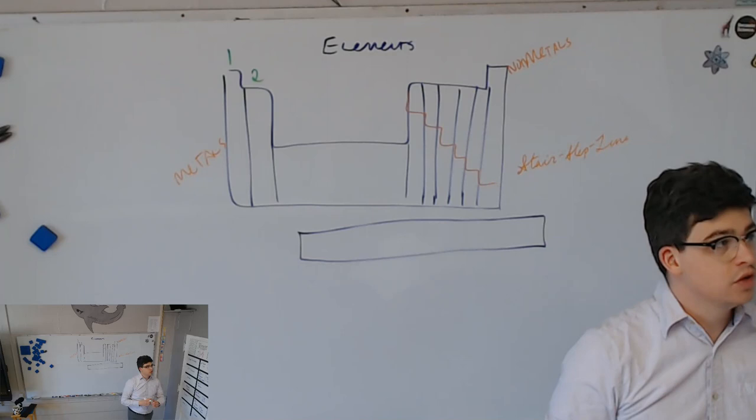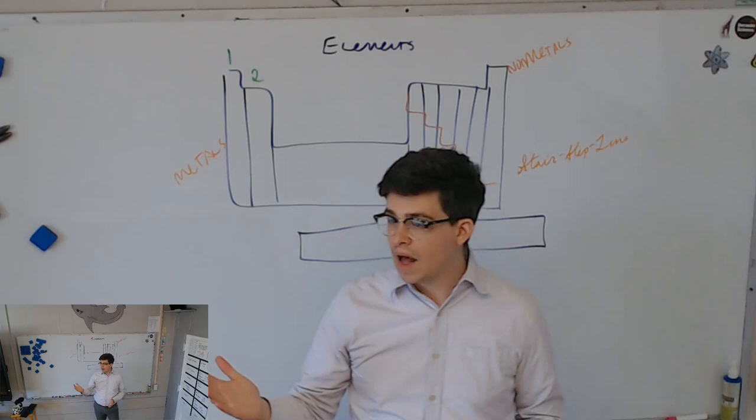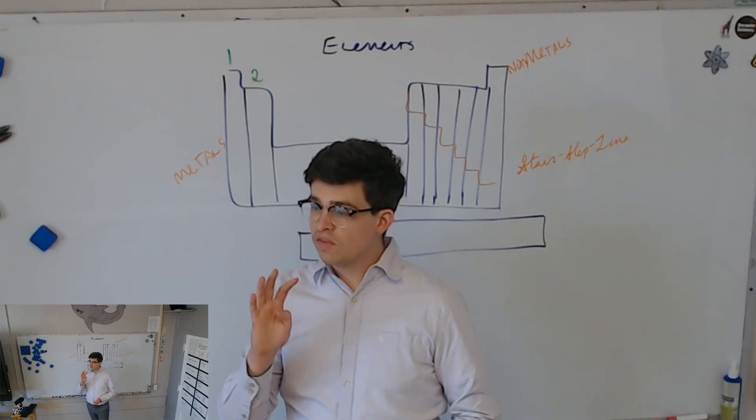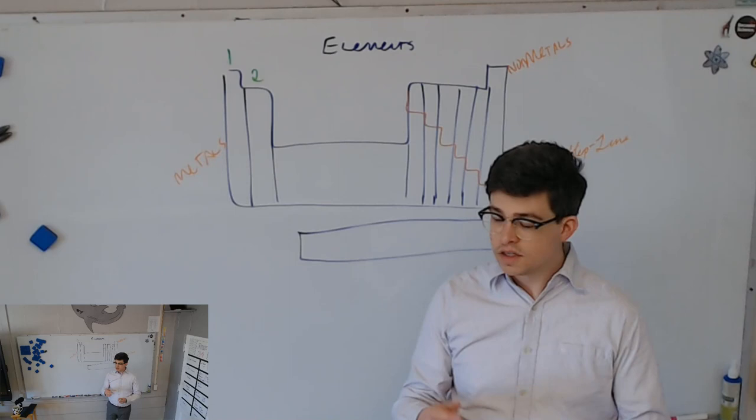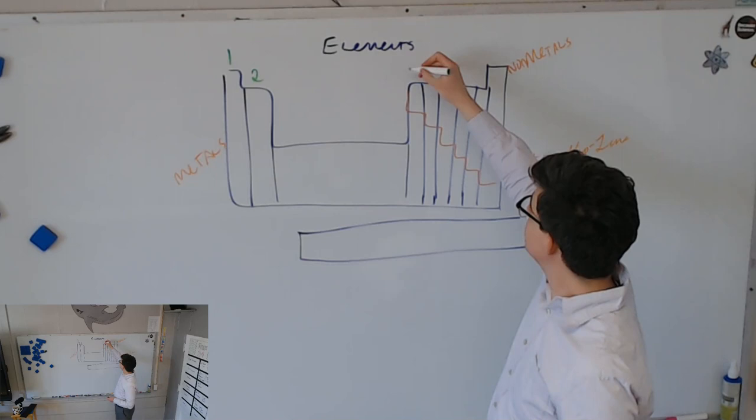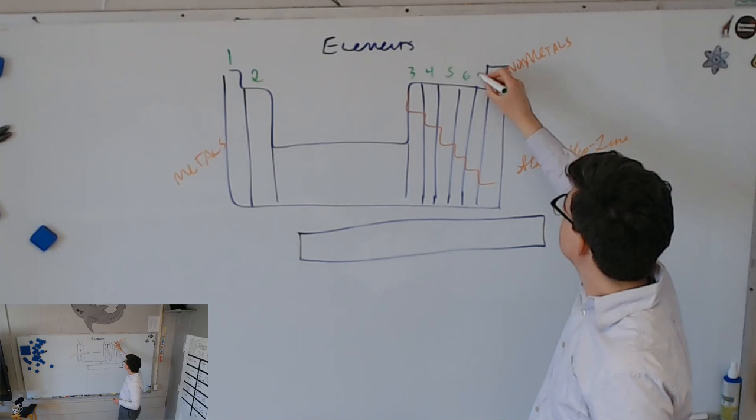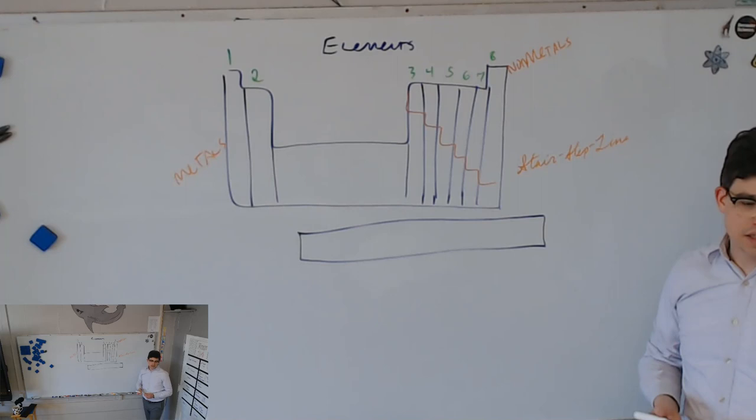These all have two, the ones in group two have two. For instance, beryllium. Beryllium, how many total protons? Four. How many total electrons in the neutral atom of beryllium? Four. And if it has to have two in the first level because of two n squared, how many must it have in its second level? Two. So it has two valence electrons. Group 13 has three, group 14 has four, group 15 has five, group 16 has six, group 17 has seven, and group 18 has eight.